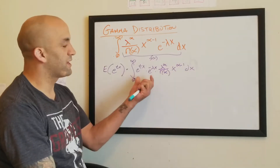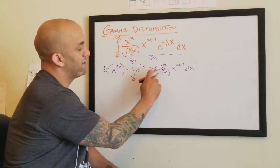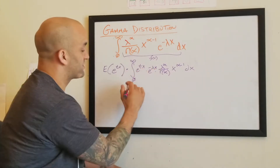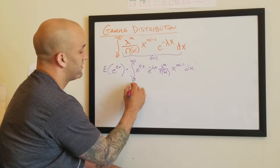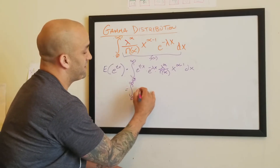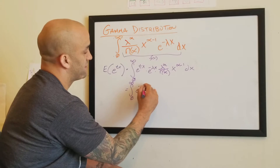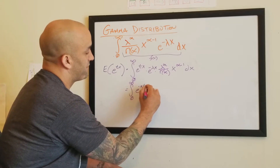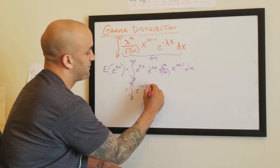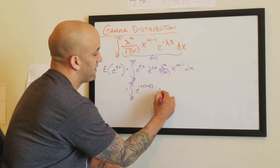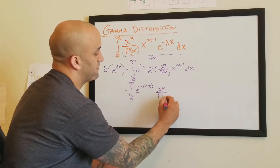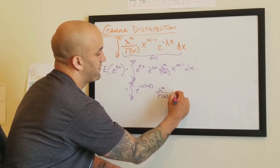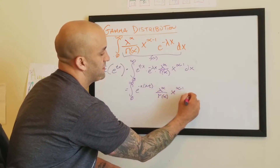Now I put these two together because we're going to combine these terms. What I'm actually going to do is pull out a negative x, so we can sum this from zero to infinity. We have e to the negative x times lambda minus t, times lambda to the alpha over gamma of alpha, times x to the alpha minus 1 dx.